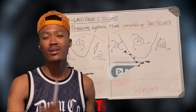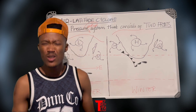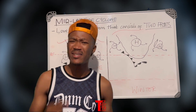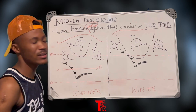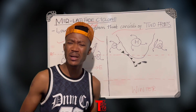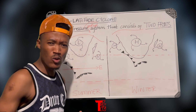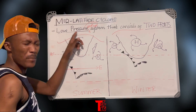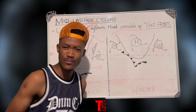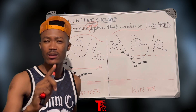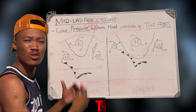What is a mid-latitude cyclone? Also known as a temperate cyclone, an extra-tropical depression, or just a frontal depression. These cyclones are called low pressure weather systems that consist of two fronts: the cold front and the warm front.